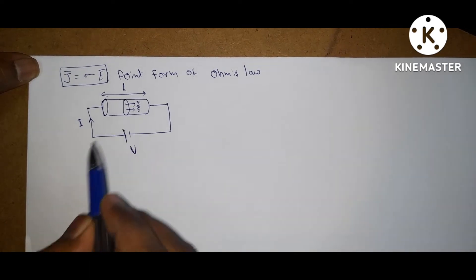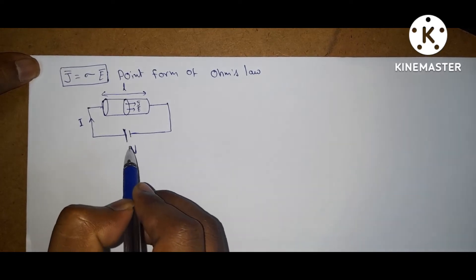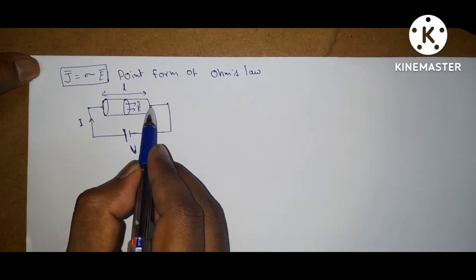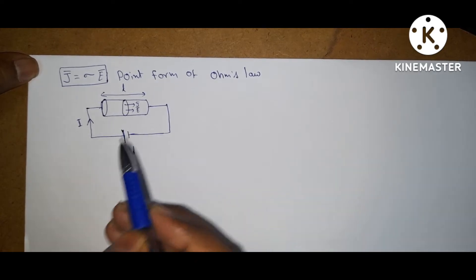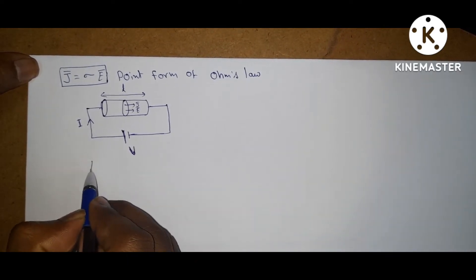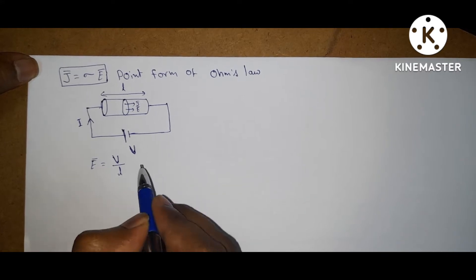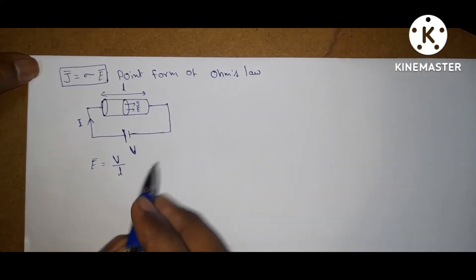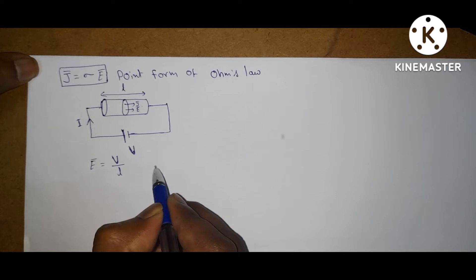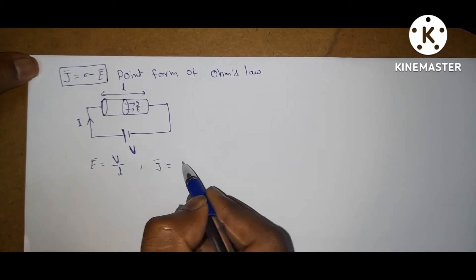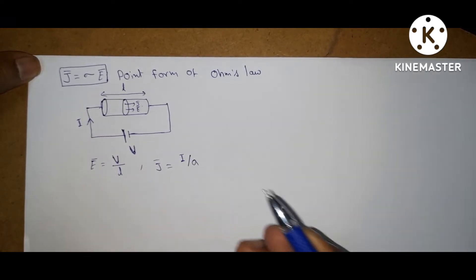Now consider the previous diagram. If we apply an external voltage source to any conductor, current will flow through this conductor. Assume the length of the conductor is L. From this, the electric field can be written as voltage V divided by L. Current density J means current per area — where area means the cross-sectional area.